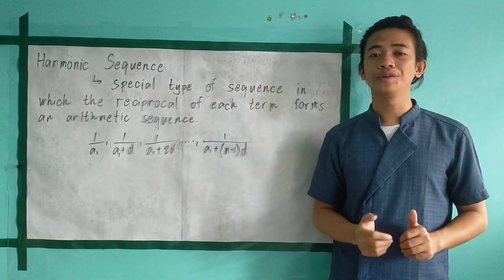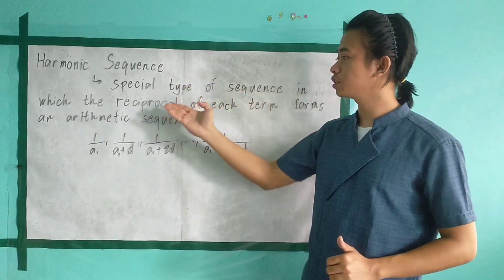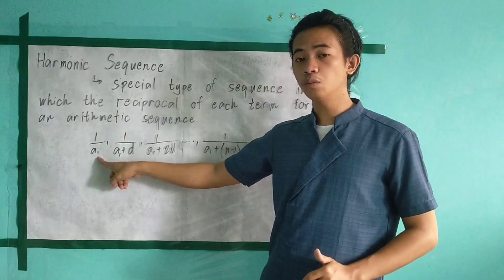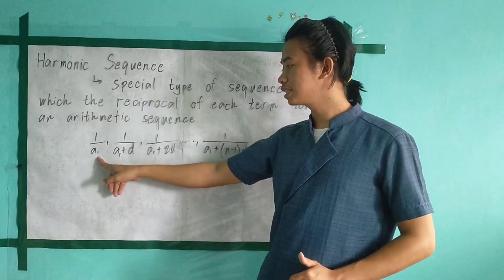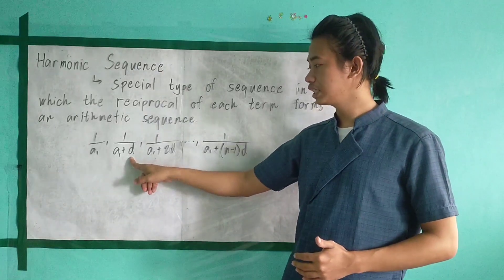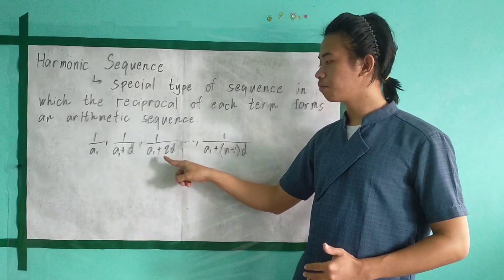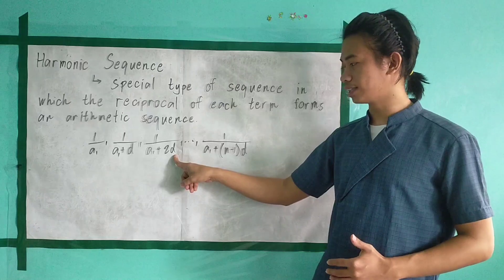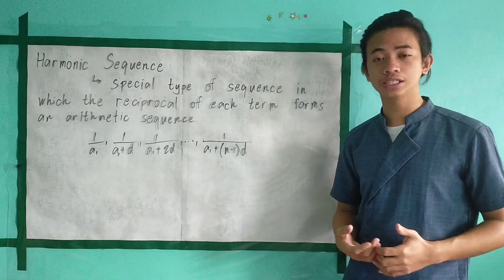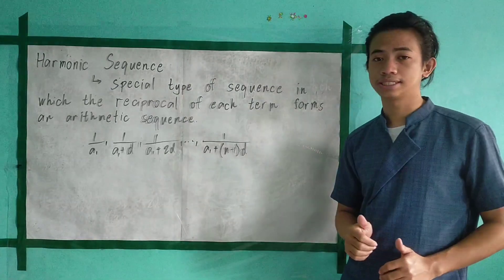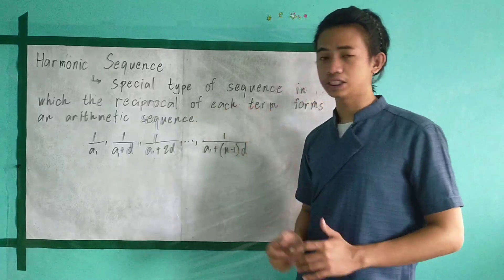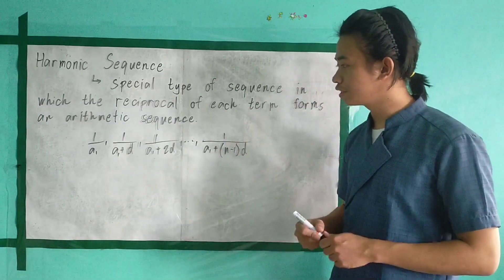Harmonic sequence. When we say harmonic sequence, it is a special type of sequence in which the reciprocal of each term forms an arithmetic sequence. So we have 1 over A1, the first term; 1 over A1 plus d, the second term; 1 over A1 plus 2d, the third term; up to 1 over A1 plus (n minus 1) times d — the general formula of an arithmetic sequence. Notice that in harmonic sequence, the reciprocal of each term forms an arithmetic sequence.